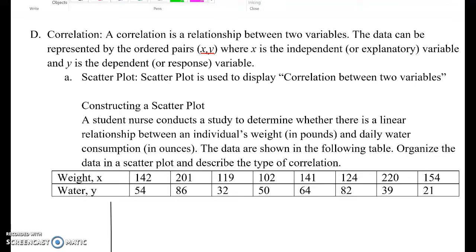Correlation is a relationship between two variables, especially quantitative variables. The data can be represented by the ordered pair x and y, where x is the independent variable and y is the dependent variable.